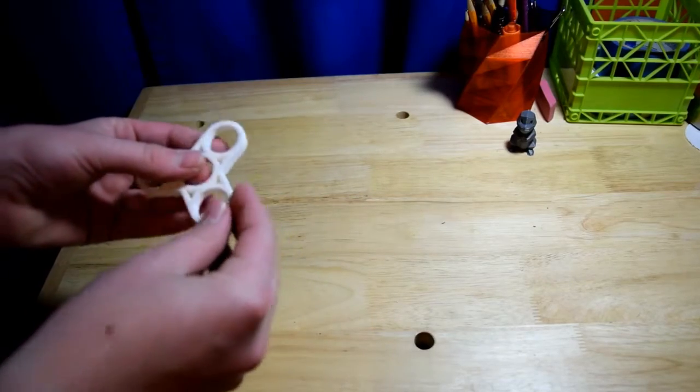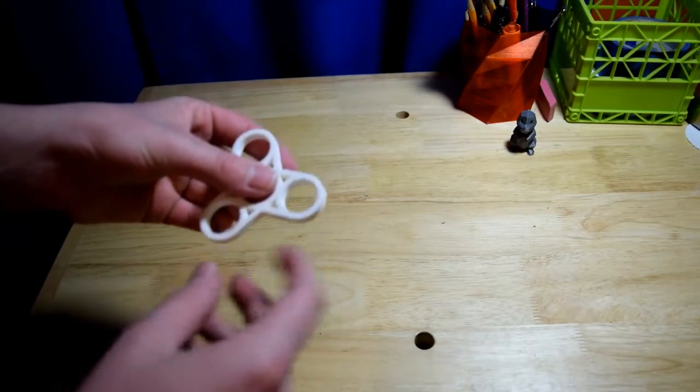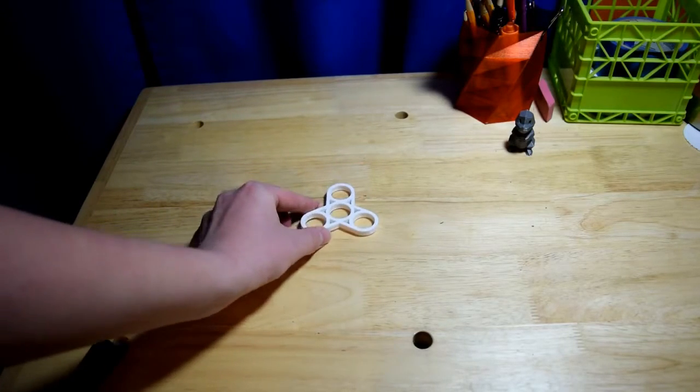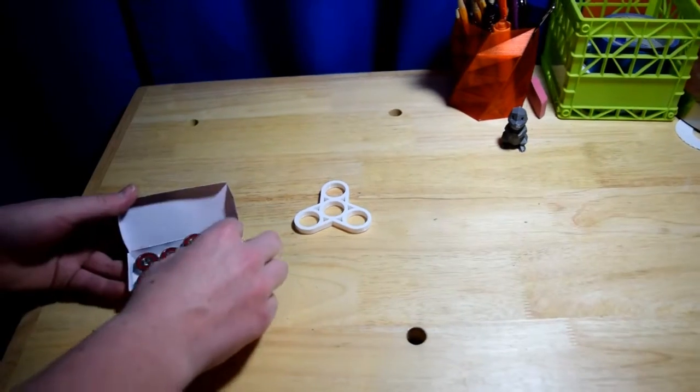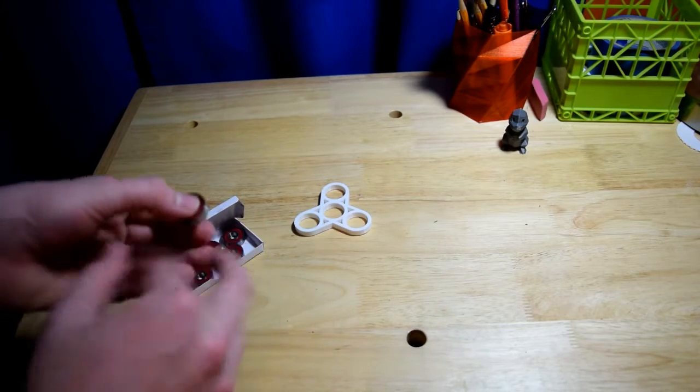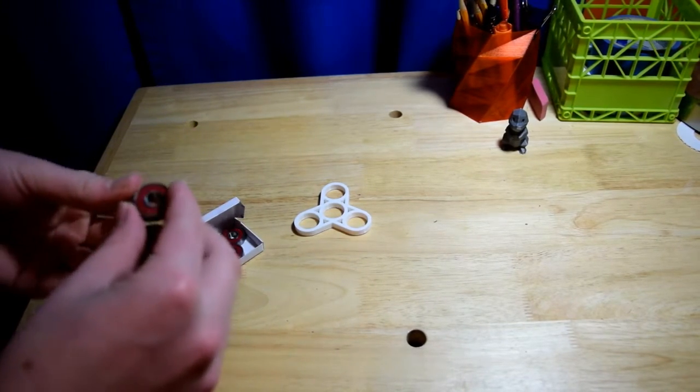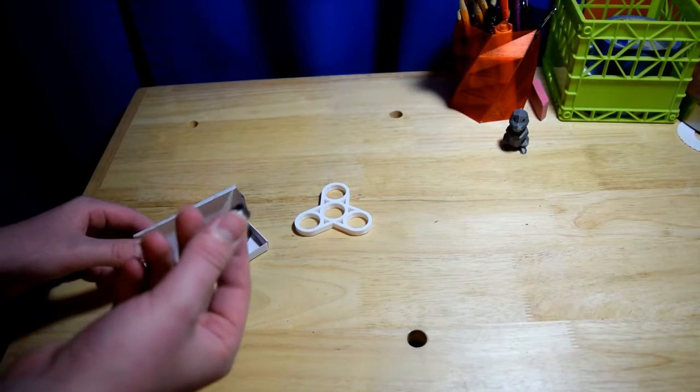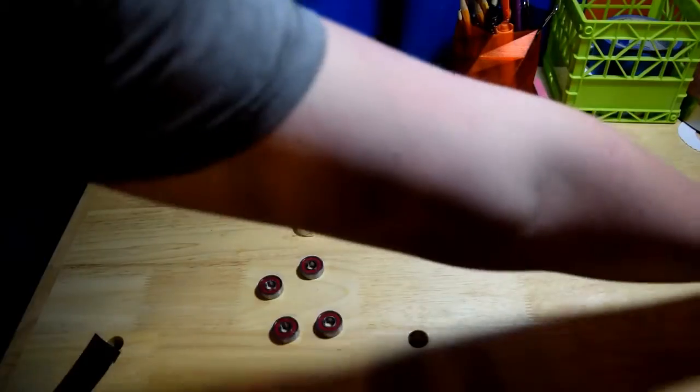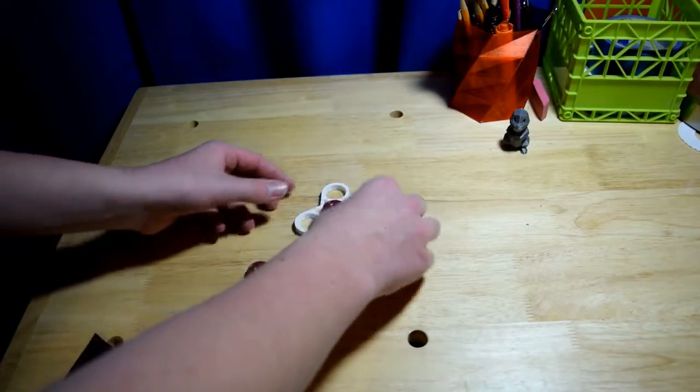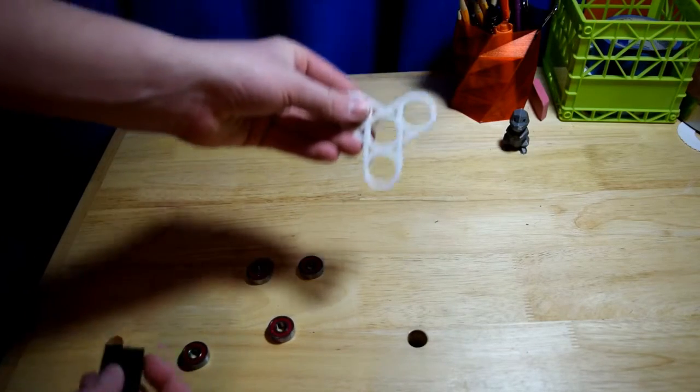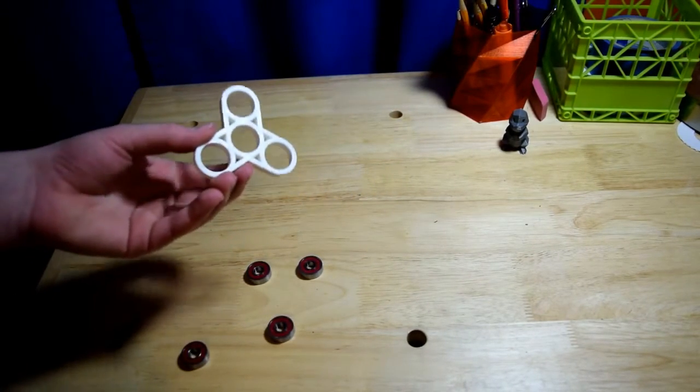Today I have this fidget spinner that I recently 3D printed, with bone red bearings to go with it. Really good bearings. They're about $11.65 a box right now, or for one spinner it's about $5.50 per spinner. Today I'm going to be making one.